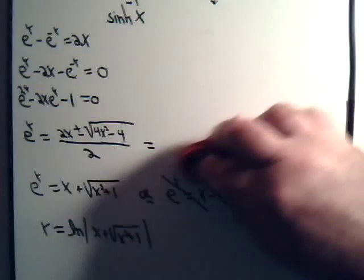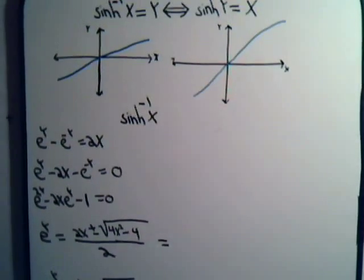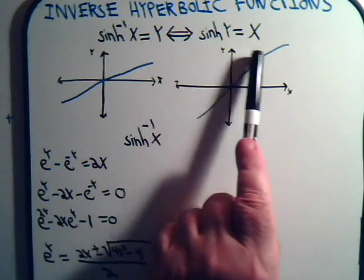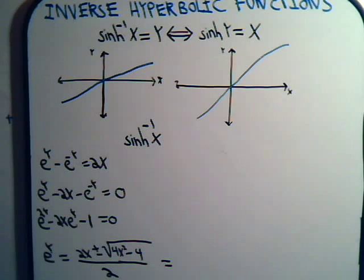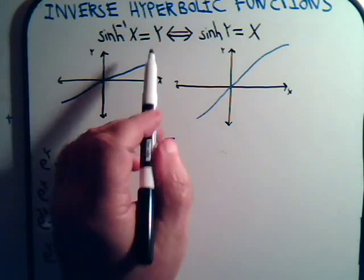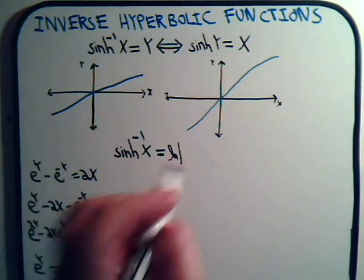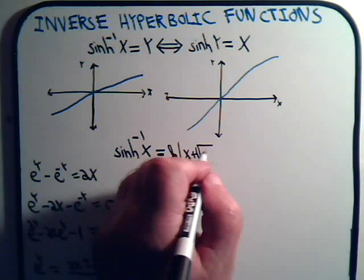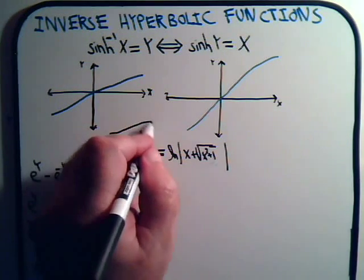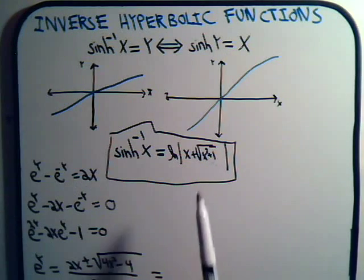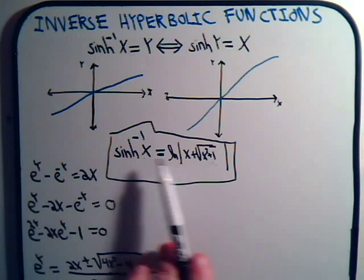We need to remember what y is — going back, y is also the inverse hyperbolic sine of x. So we can now say that the inverse hyperbolic sine of x equals the natural log of x plus the square root of x squared plus 1. It's pretty straightforward to derive the logarithmic form of the inverse hyperbolic sine.